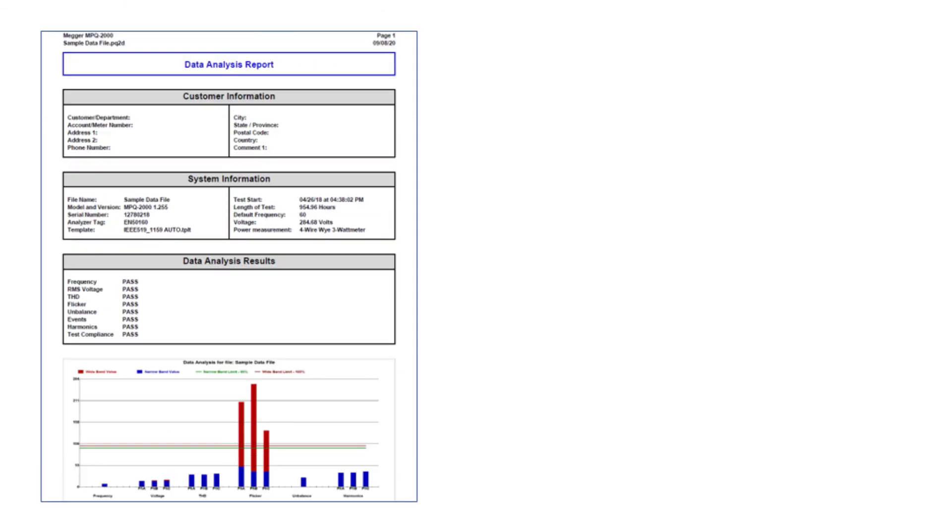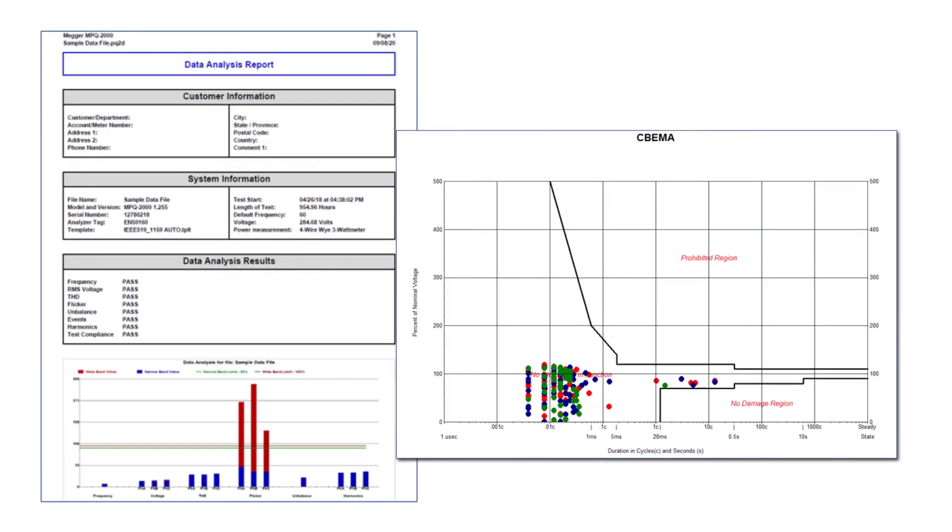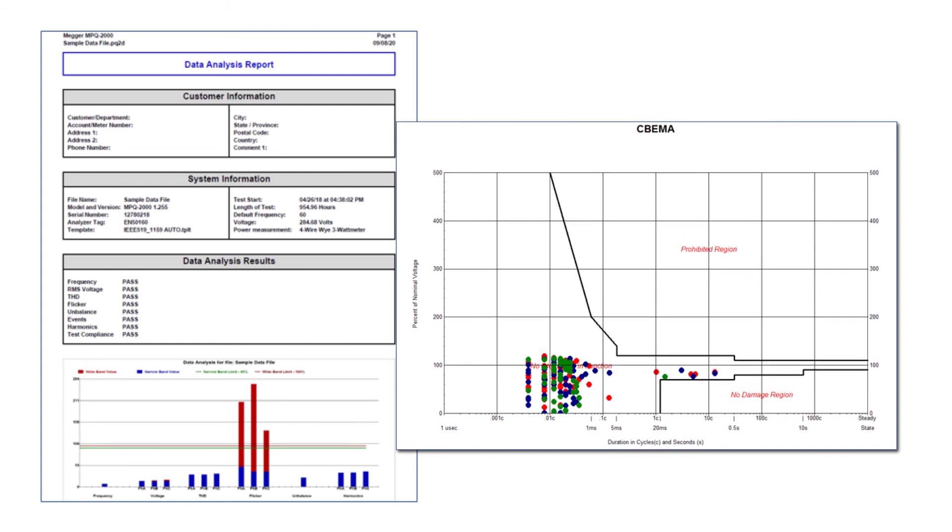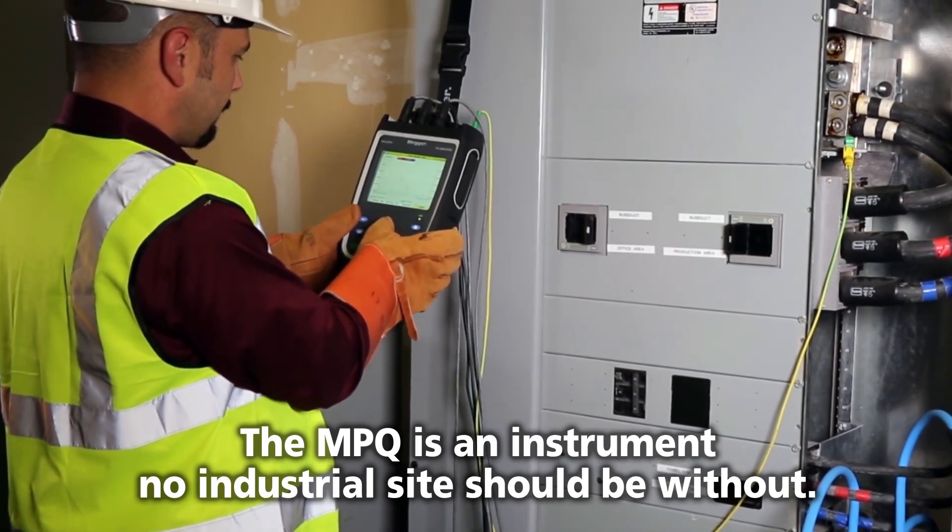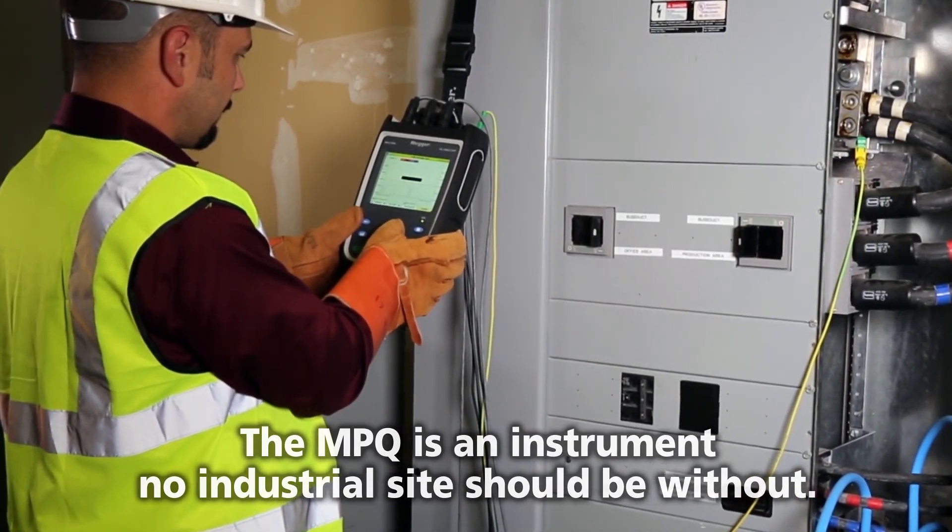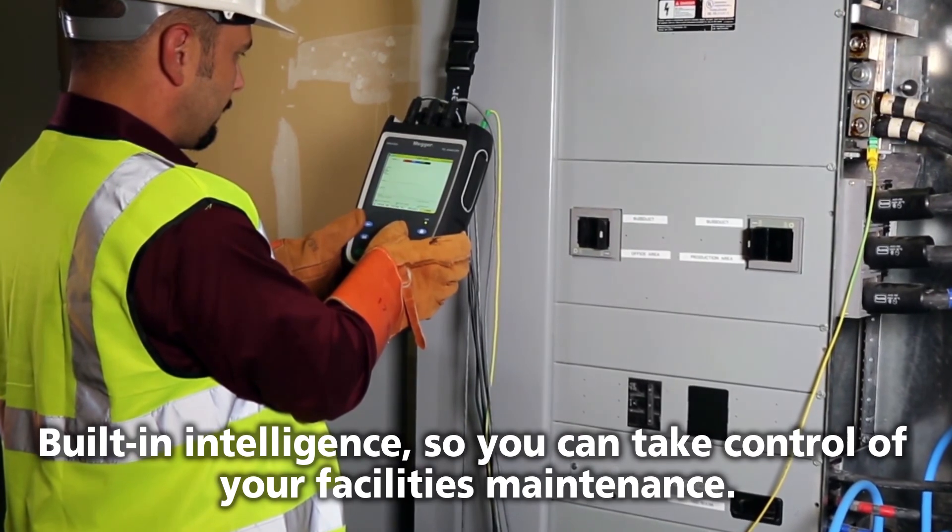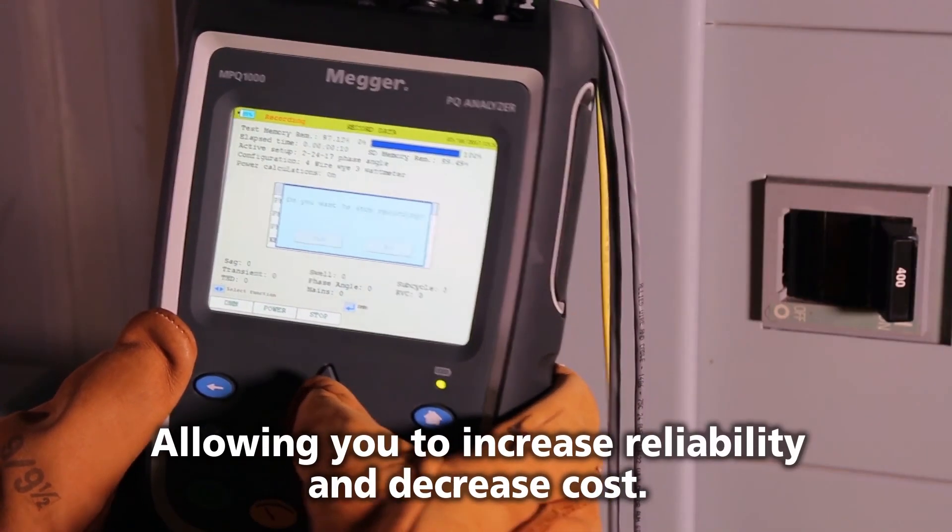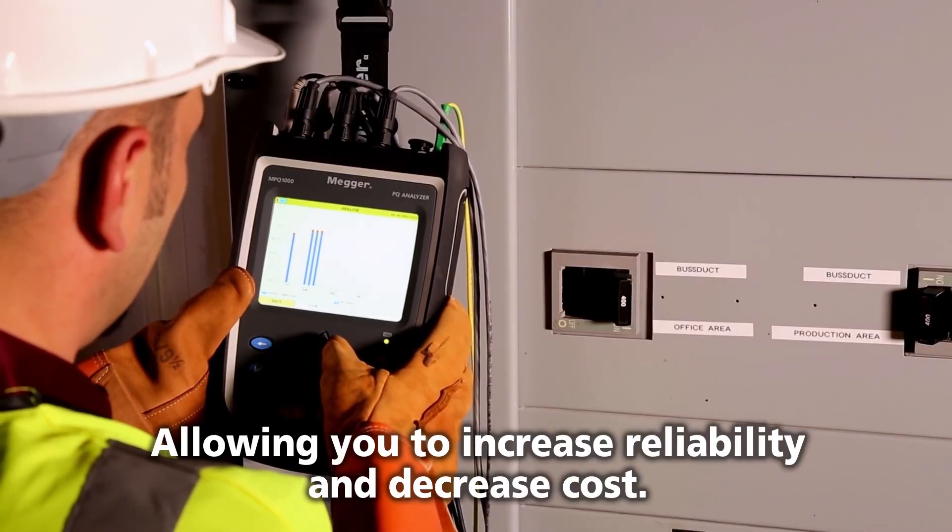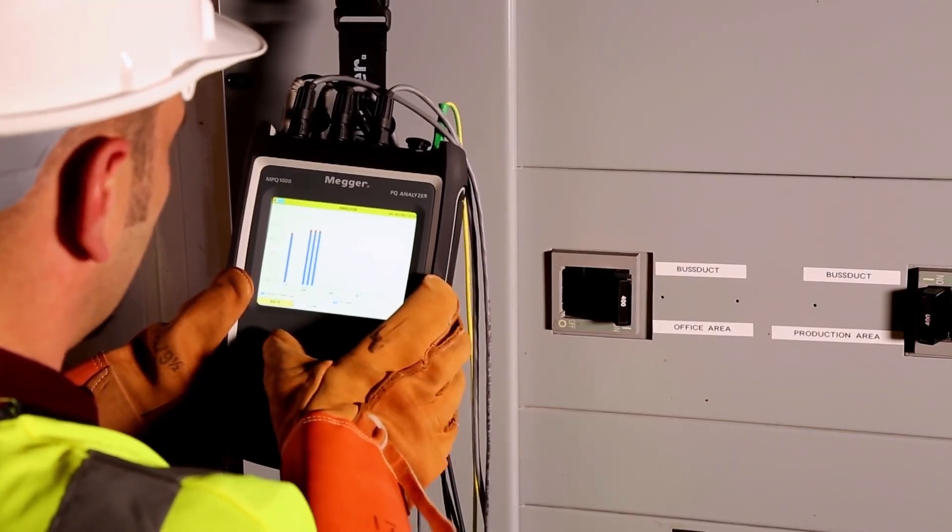You then can create a data analysis report in seconds. The report will also include a CBEMA chart. This allows you to view all recorded events and see which ones could be causing computer or controller problems. The MPQ is an instrument no industrial site should be without. The built-in intelligence will allow you to take control of your facility's maintenance. It will allow you to increase reliability and decrease cost. Thank you for your time and have a great day.